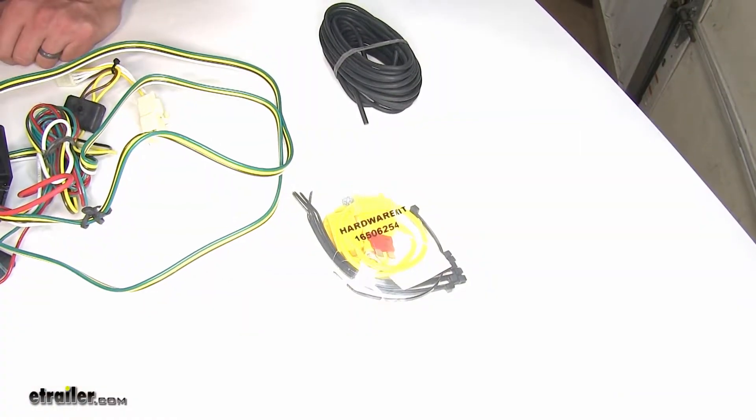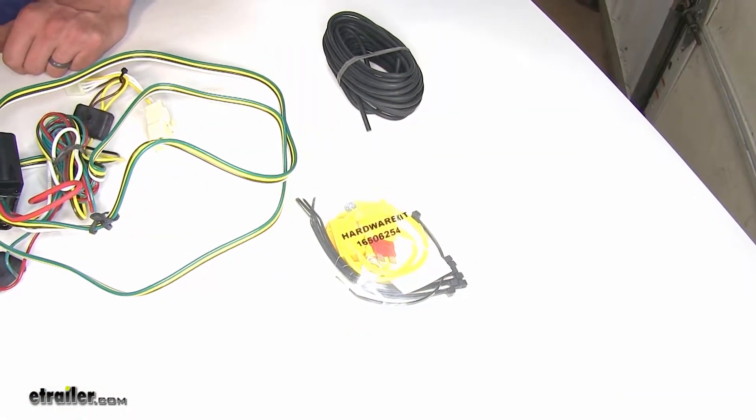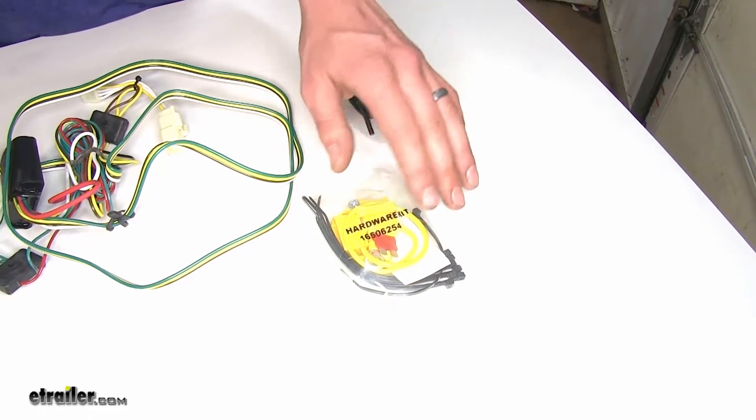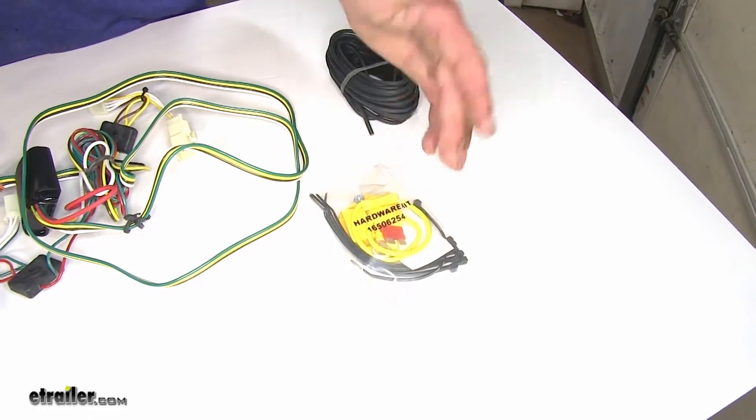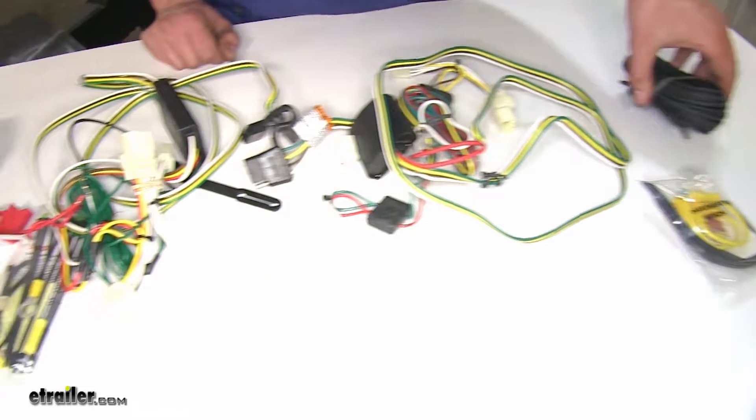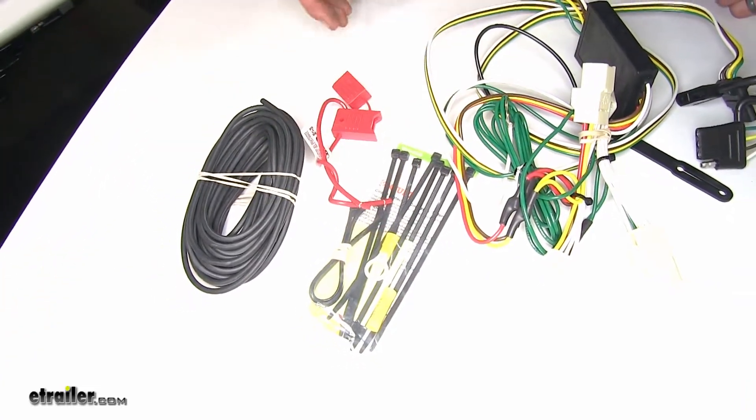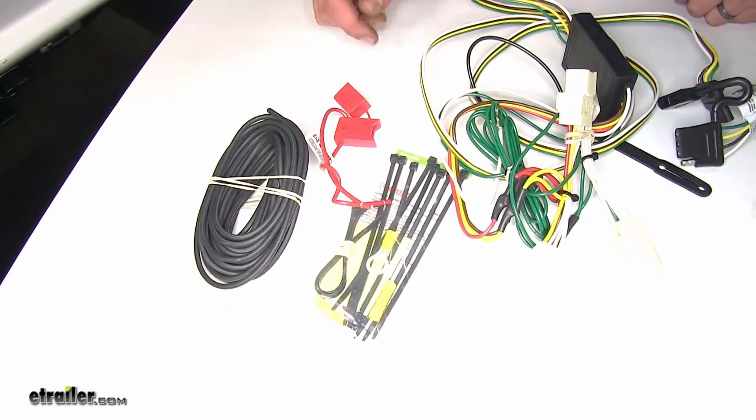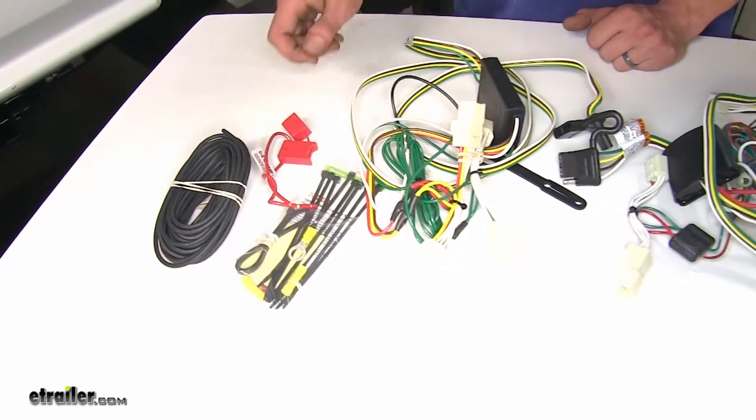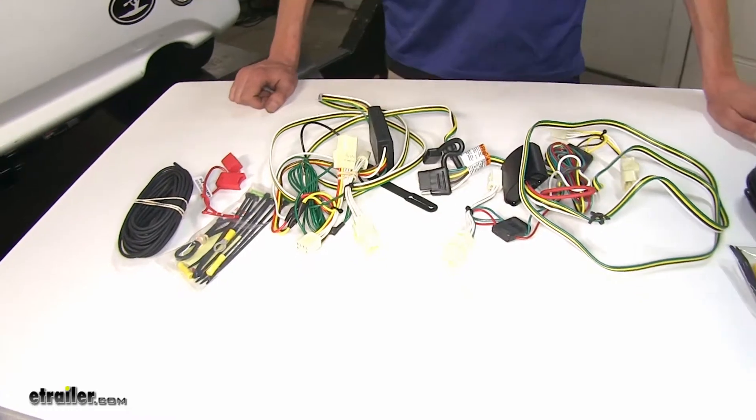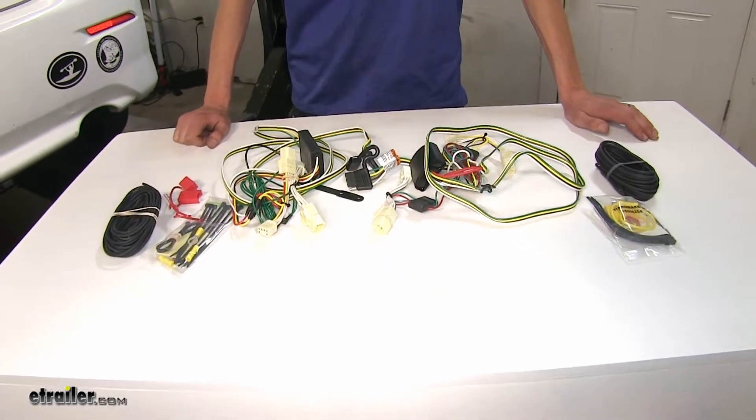Now both of these wiring harnesses are also going to come with everything you need to get the job done. You'll have your ring terminals, your fuse, your self-tapping screw, your butt connectors, and your wiring to make your connections, as well as some zip ties to help secure up your wiring along the way and a self-adhesive double-sided tape pad to help secure your module box inside the vehicle.